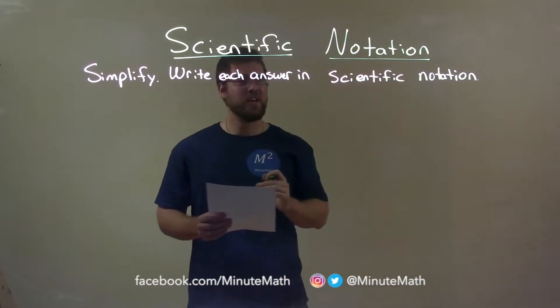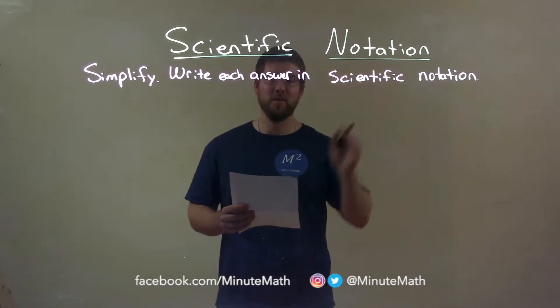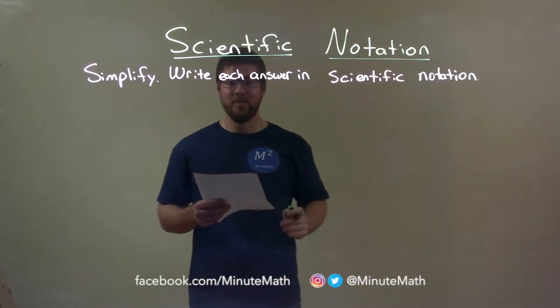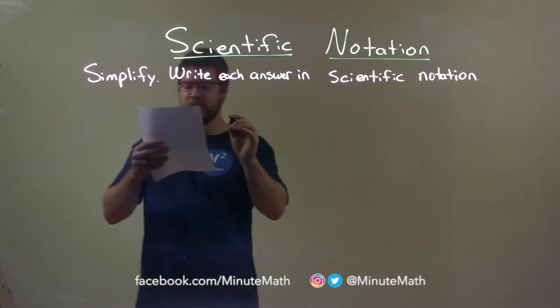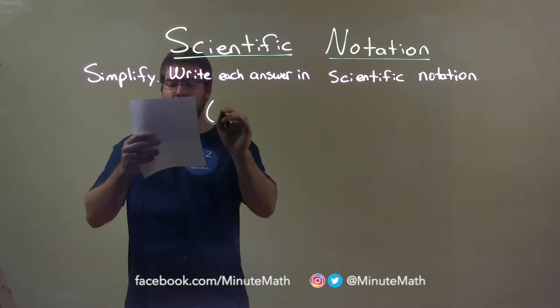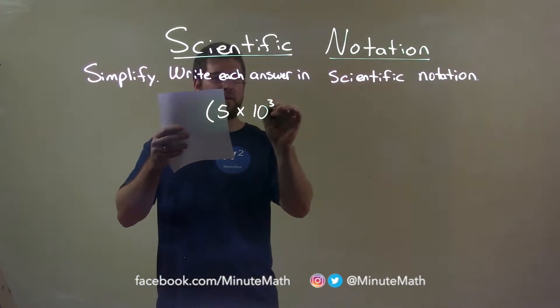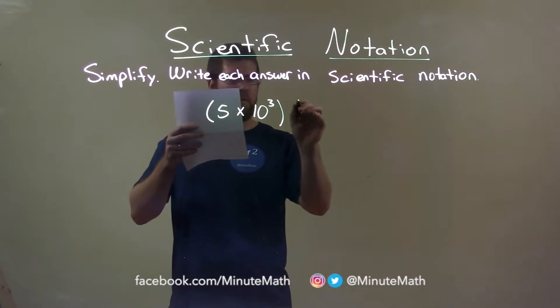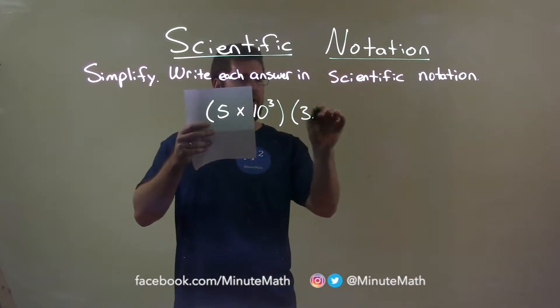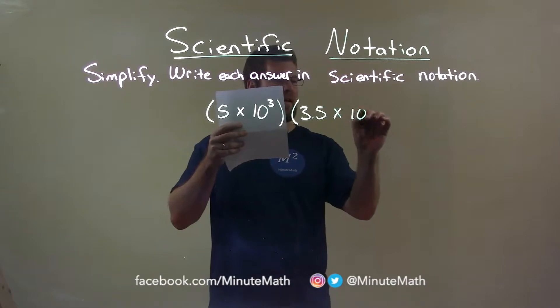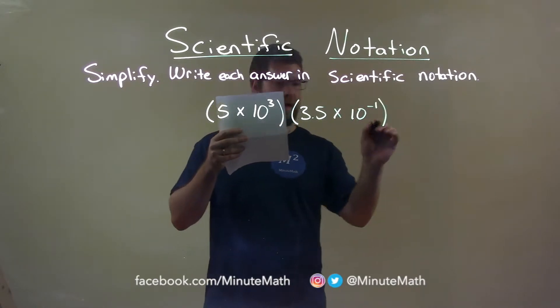We're going to simplify and write each answer in scientific notation. If I was given this problem, 5 times 10 to the third power, multiply that by 3.5 times 10 to the negative first power.